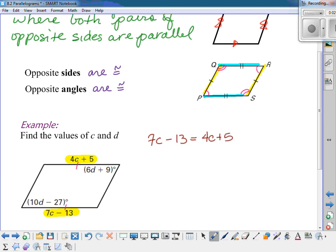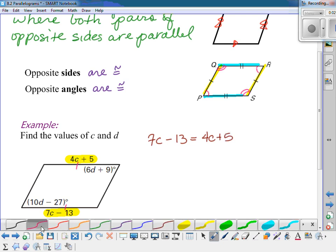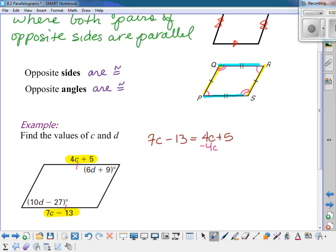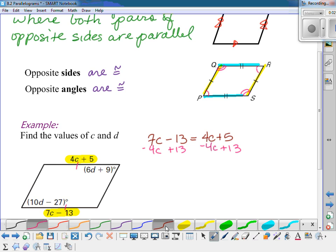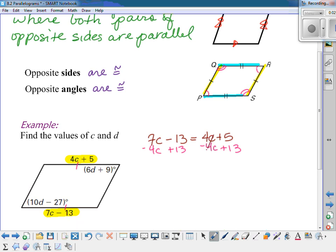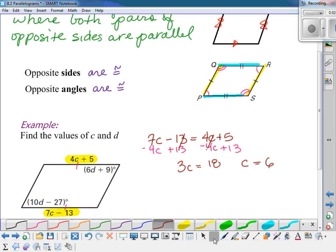And then it's just an Algebra 1 problem. We subtract 4c from both sides and add 13 to both sides. When we do that, we get 3c is equal to 18. And so we need to divide by 3 and we have that c is equal to 6.